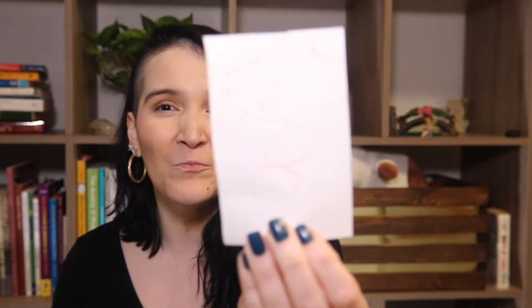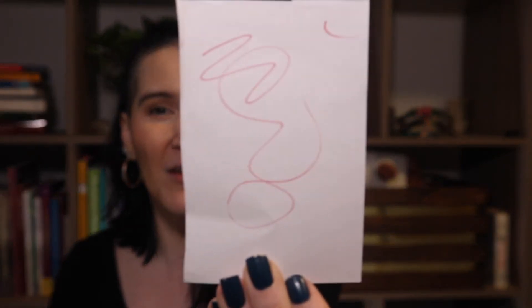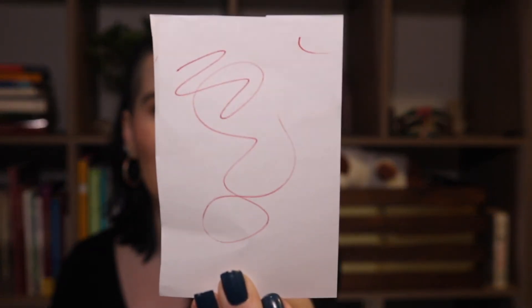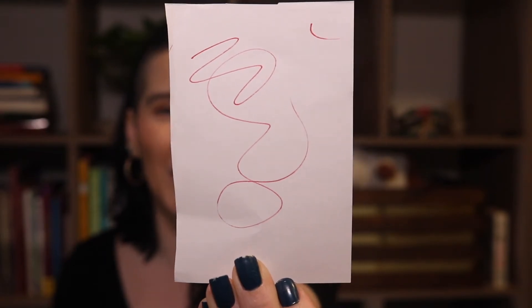Now one day, all these weird things started happening. They heard things in the news that they didn't understand. They heard their parents worrying. They couldn't go to school, and everything felt really messy. And here's the squiggle with everything being messy and kind of weird, and them not understanding what's happening.